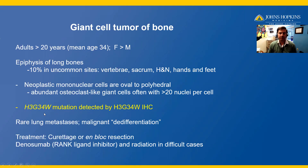Giant cell tumor of bone will rarely have lung metastases, and a subset may show malignant dedifferentiation with an anaplastic high-grade sarcoma juxtaposed to a conventional giant cell tumor of bone. This is a locally recurrent and rarely metastasized neoplasm. Treatment is en bloc resection, and in difficult cases, radiation or treatment with denosumab, which is a RANK ligand inhibitor, may be considered.